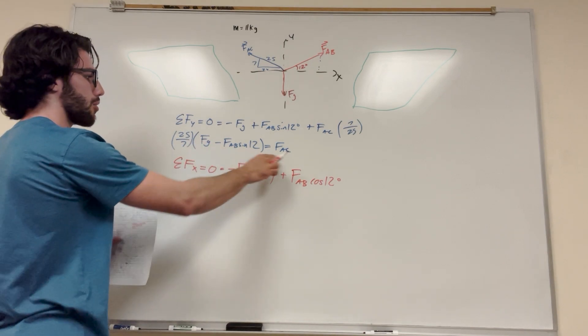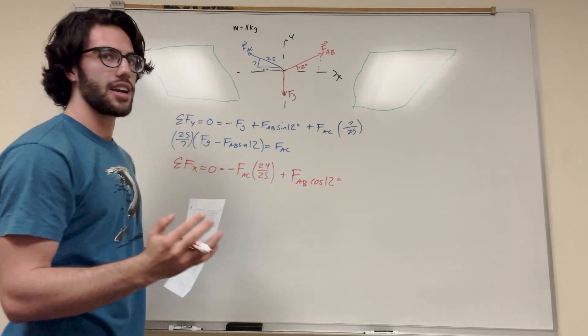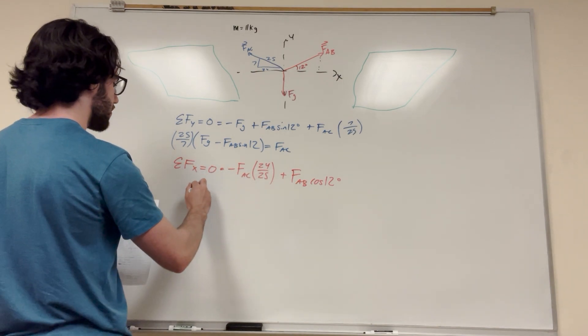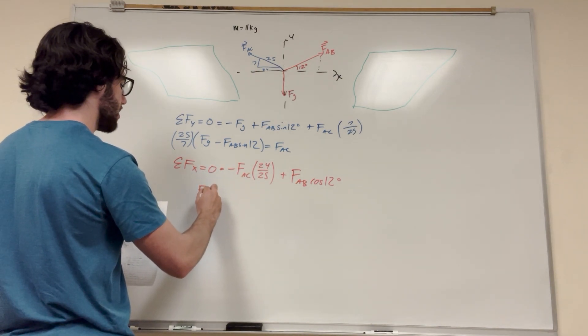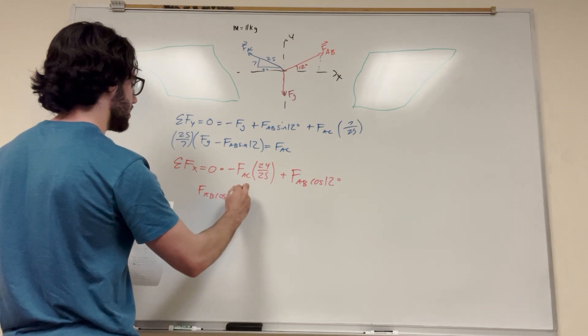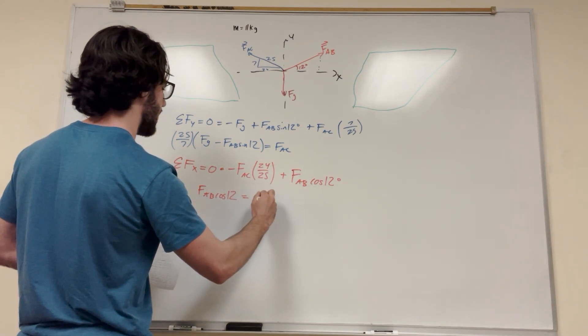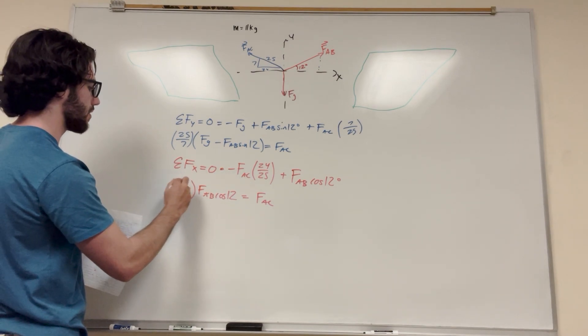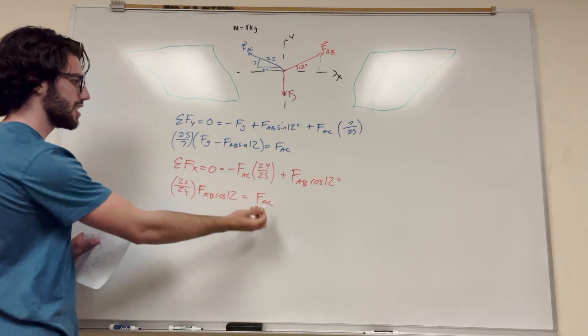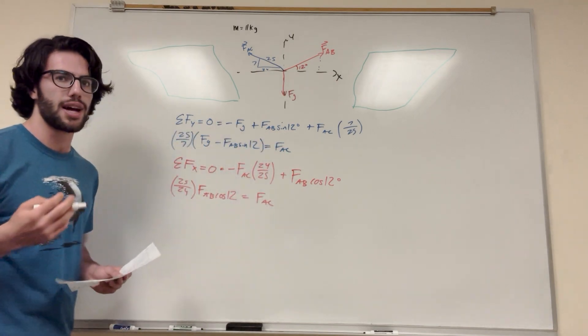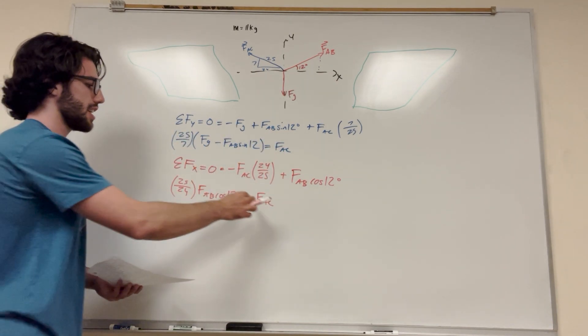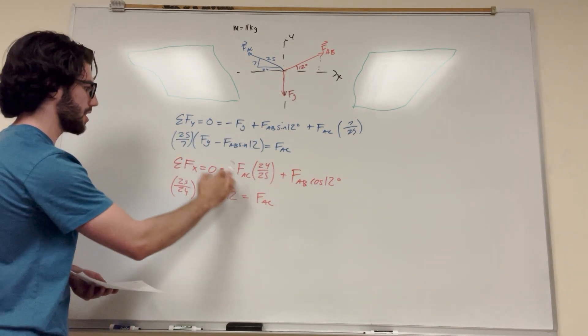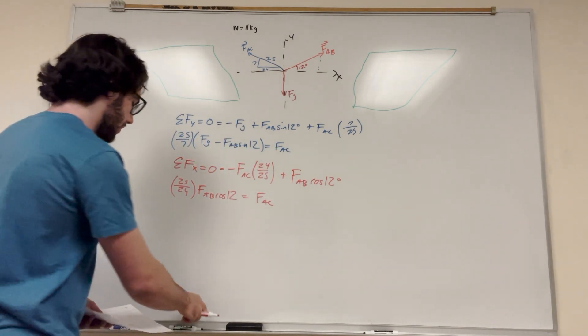So this is our equilibrium equation. So we want to get, again, force AC by itself. That's going to make it a lot easier. So I'm going to subtract this over, and they're going to both become positive. So force AB cosine of 12 is equal to force AC. And then we're going to multiply this 25 over 24 over. So we're going to look at 25 over 24. That'll cancel out. So we have two things with force AC just by themselves. So we know force AC is equal to force AC, so that means that this equation here has to be equal to this equation here. So let's go ahead and do that.